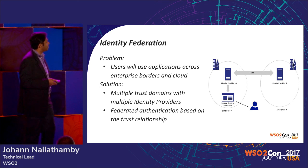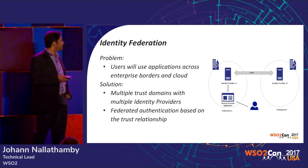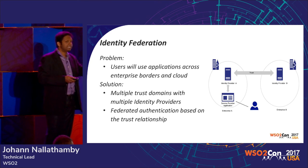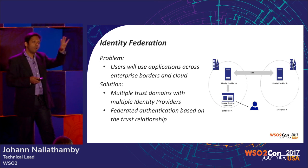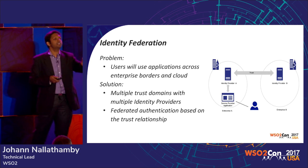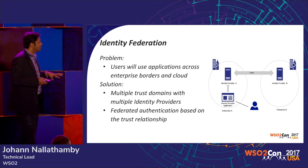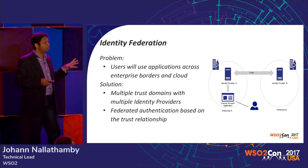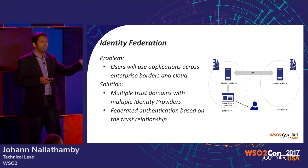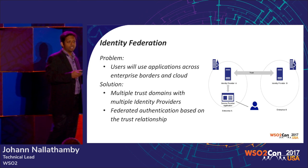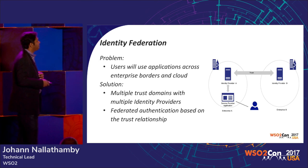Bob learns about identity federation. Users will use applications across enterprise borders and in the cloud. The solution is to set up multiple trust domains, each with an identity provider, and establish trust between those identity providers. Applications always talk to their own identity provider; identity providers federate between themselves. This solves Bob's problem — company X and company Y can establish a trust relationship so Y's users can seamlessly access X's applications.